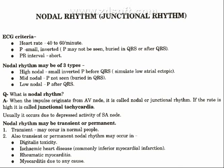Nodal rhythm may be of three types. High nodal: small, inverted P before QRS — simulates low atrial ectopic. Mid nodal: P not seen, buried in QRS. Low nodal: P after QRS.